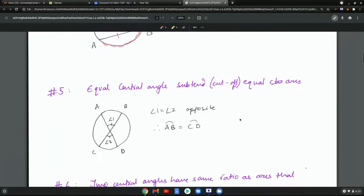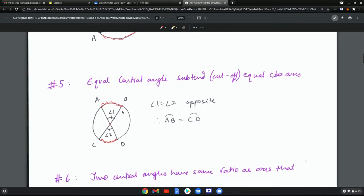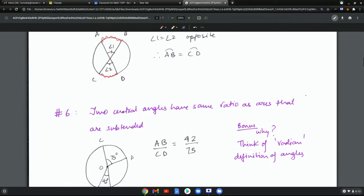The next one says equal central angles subtend equal arcs. Now because these are straight lines, these are opposite angles and they have to be equal, and when they are equal, then the arc length CD equals the arc length AB.